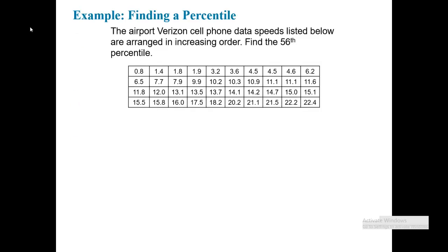Let's take a look at an example. We see the data below for airport Verizon cell phone data speeds, and we're asked to find the 56th percentile. We'll compute L using the formula. Notice that in the formula, L is the location value, K is the percentile. In our example, K would be 56, and N would be the number of data points.